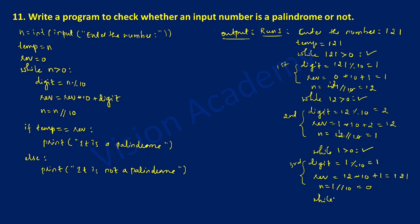Control transfers to while once more. n is now 0, and 0 is greater than 0 — no, the condition is false. Control comes out of the iterative statement and executes the selection statement. if temp equals rev: temp is holding 121, and rev is also 121 at the end of the third iteration. Is 121 equal to 121? Yes, the condition is true, so it is a palindrome will be printed.